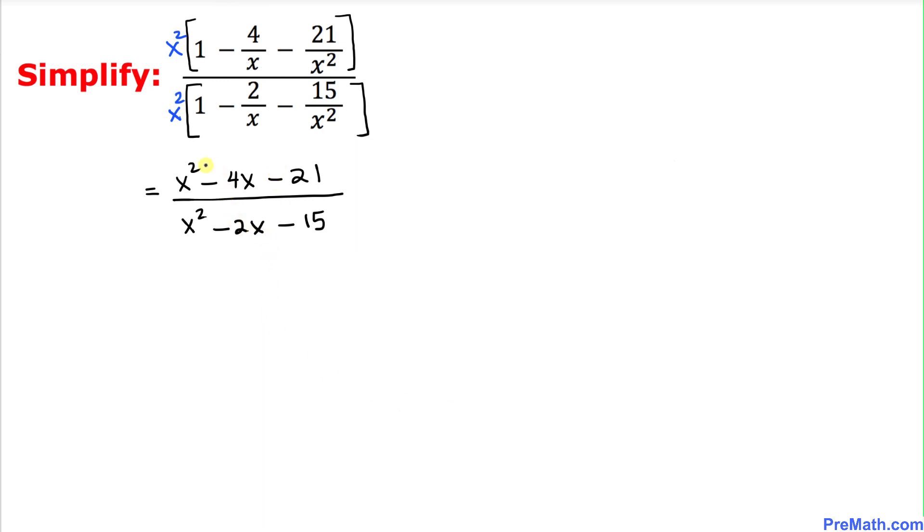And now let's focus on the top part over here x square minus 4x minus 21 which is quadratic. We can easily factor that one out and the possible factors are going to be x plus 3 times x minus 7.